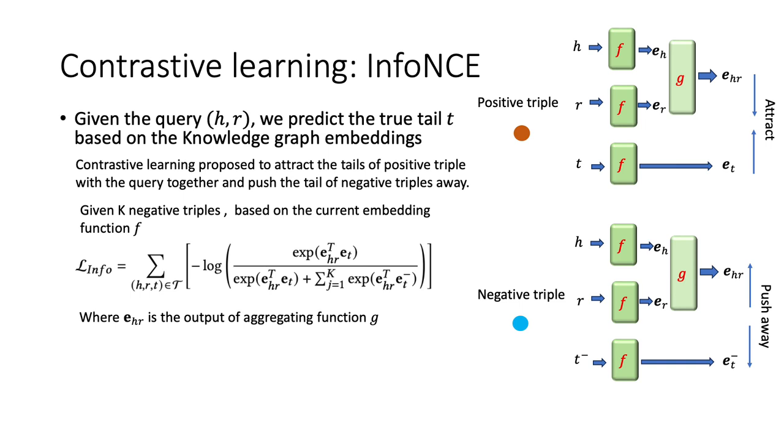Given the query head entity and relationship, we can obtain the aggregation embedding e_hr in the embedding space. We hope to attract the positive tail closer and push the negative tails away. The InfoNCE loss is commonly chosen to achieve this goal.